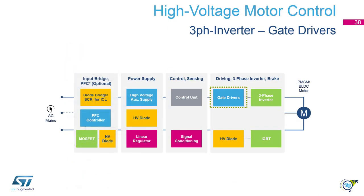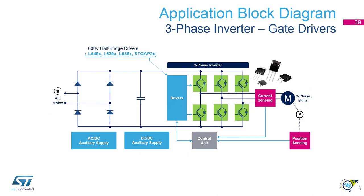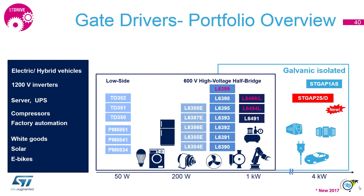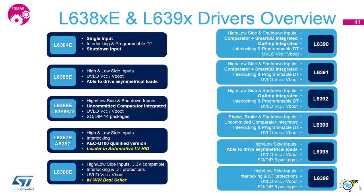Let's move to the gate drivers. ST offers a big portfolio of gate drivers. We will focus on 600 V half bridge gate drivers and our new galvanic isolated gate drivers. The two families of 600 V half bridge drivers L638 and L639 feature up to 600 V with 3.3 to 5 V input voltage. All devices integrate the bootstrap diode for supplying the charge pump on the high side switches.